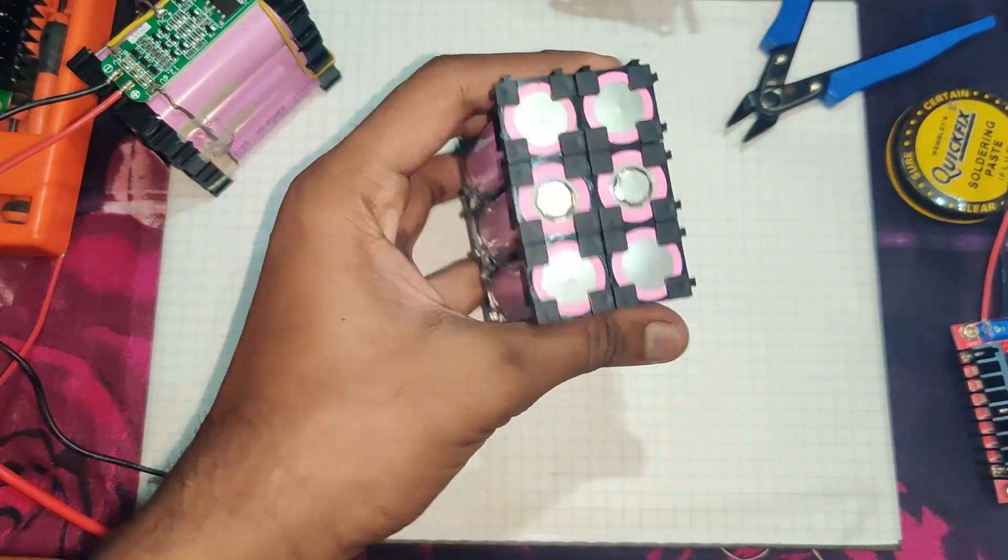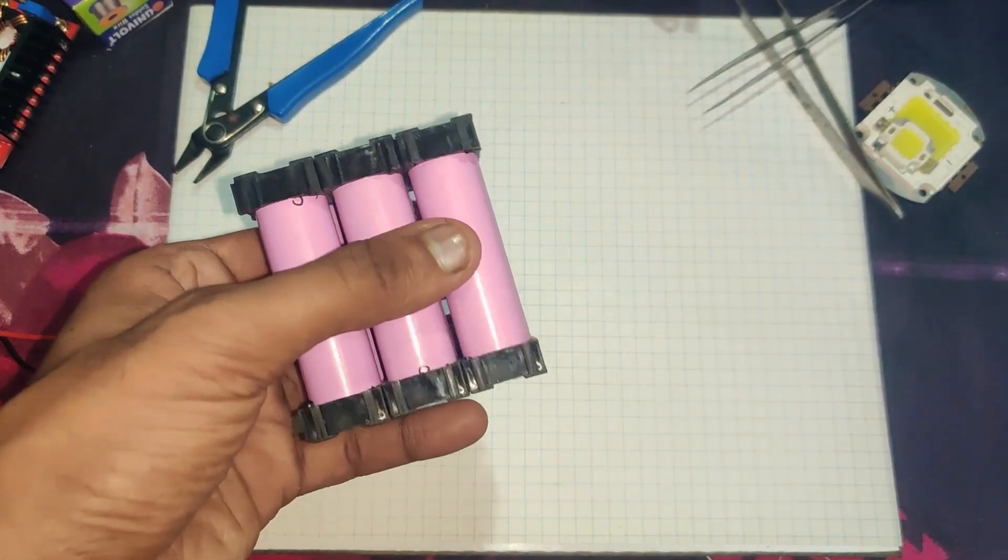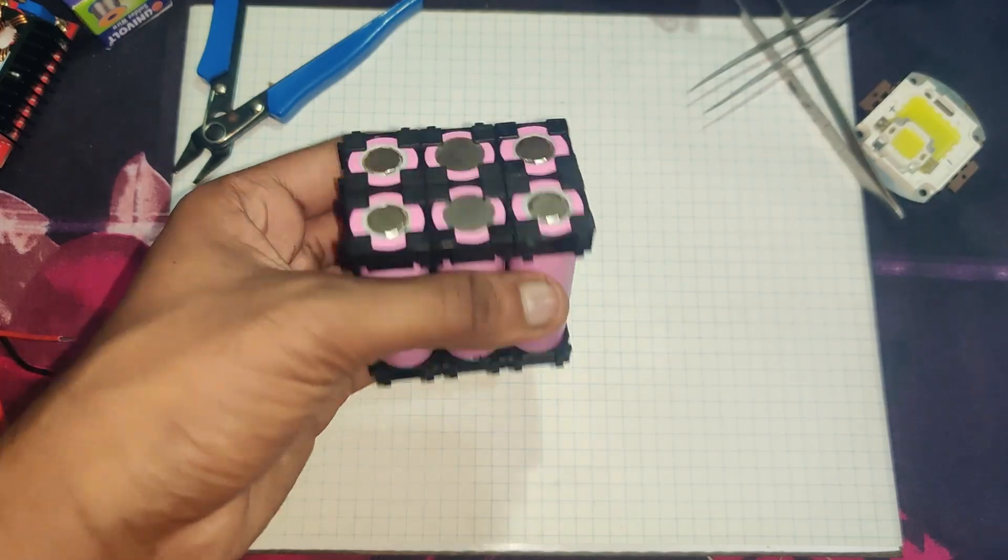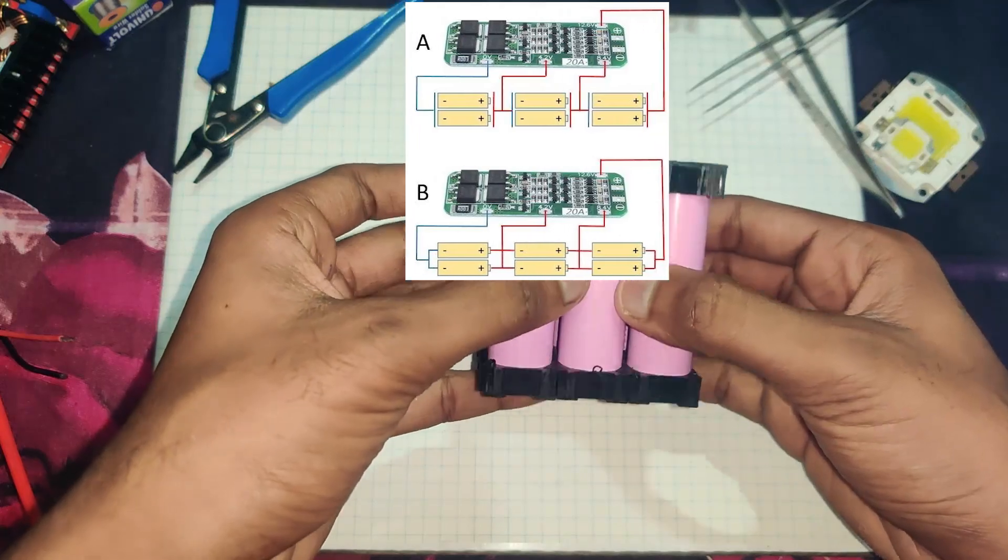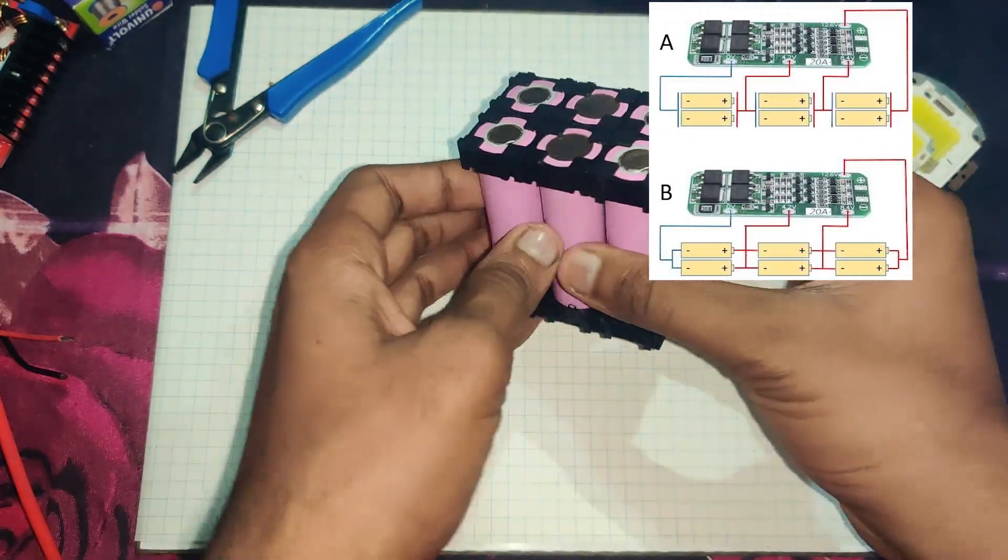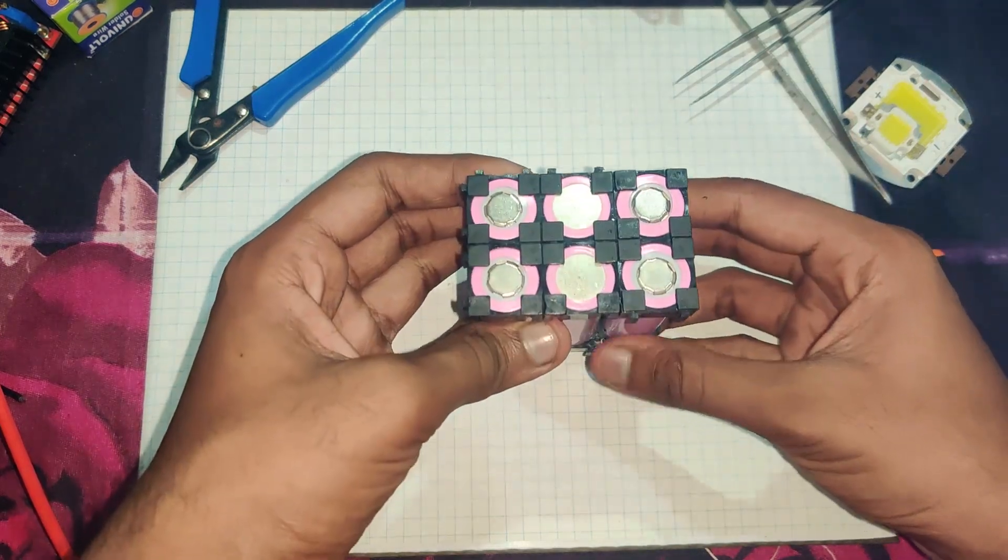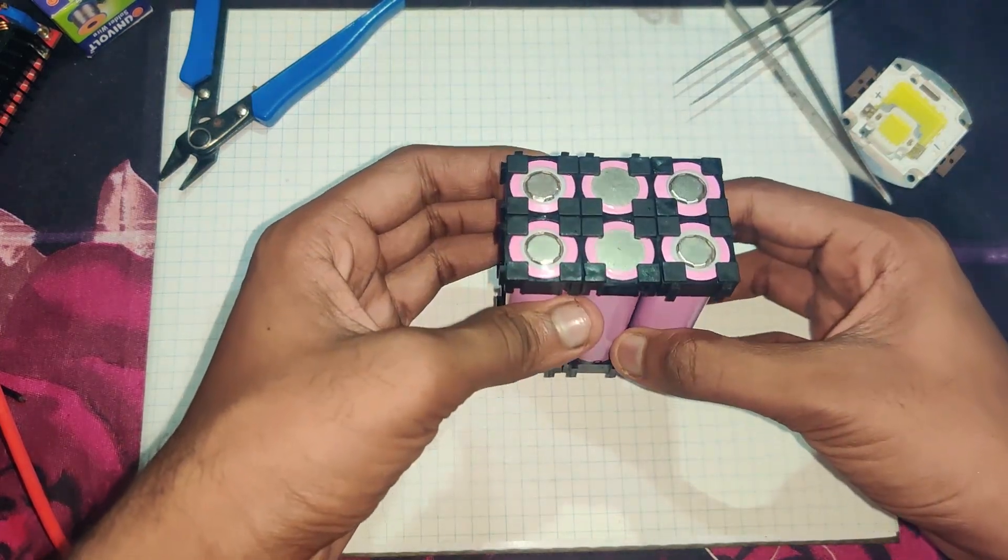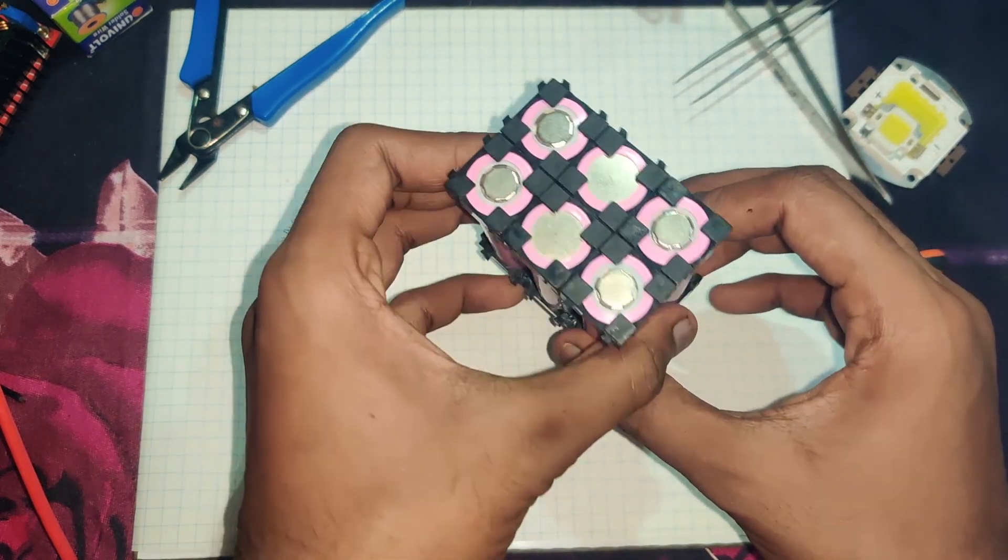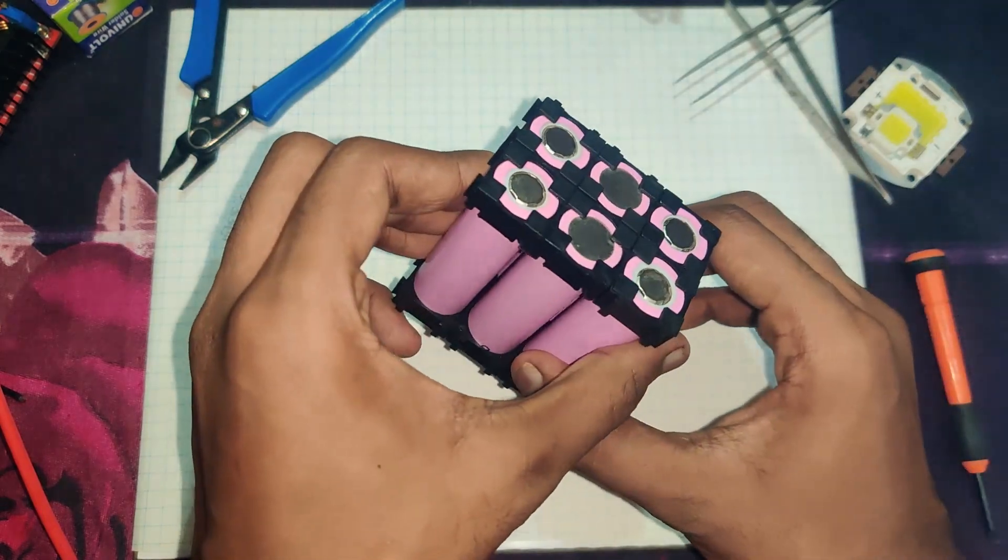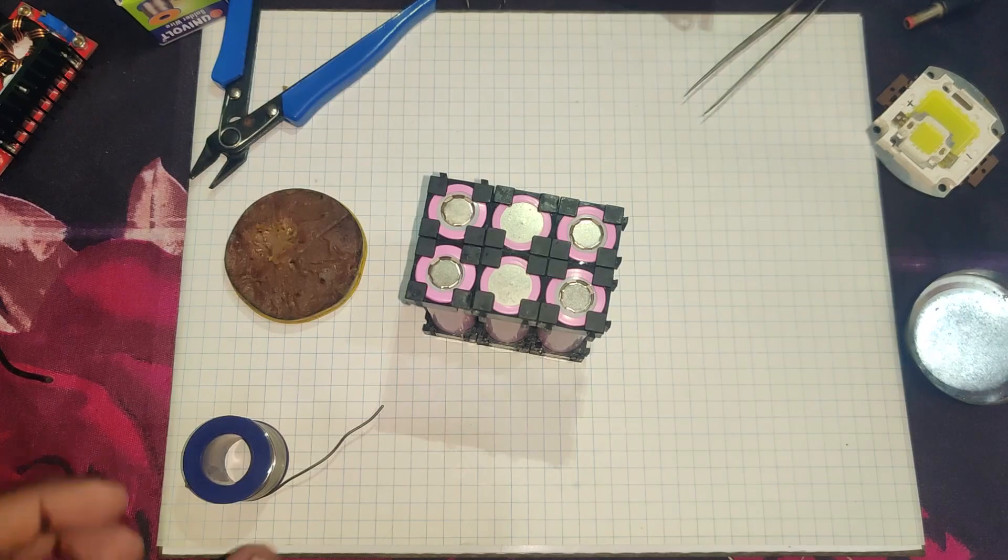Now batteries are arranged in their manner. So guys, before connecting these batteries in 3S 2P connection, make sure that they have same capacity and same voltage. If a single cell has low capacity or low voltage, it leads to inefficient battery pack which is not acceptable for electronics or any power supply.